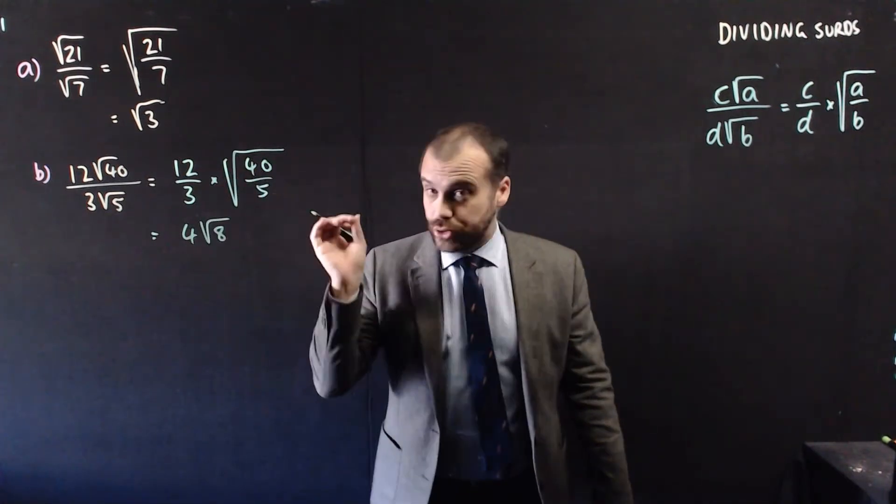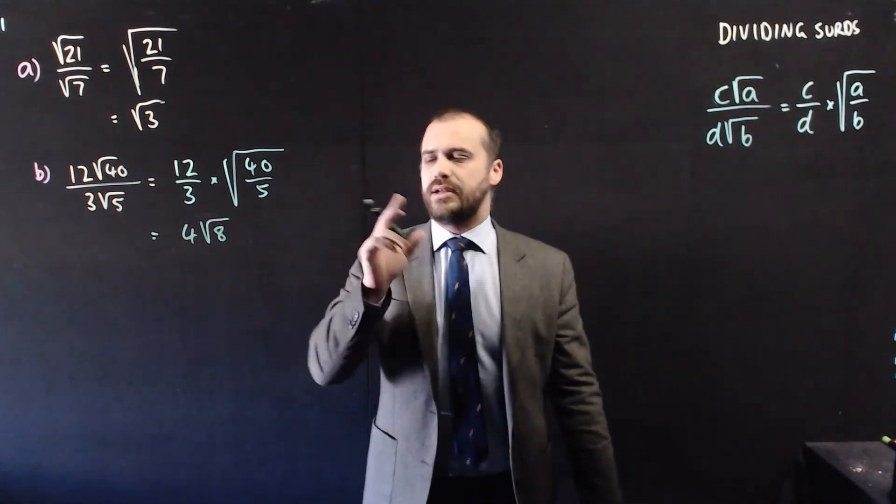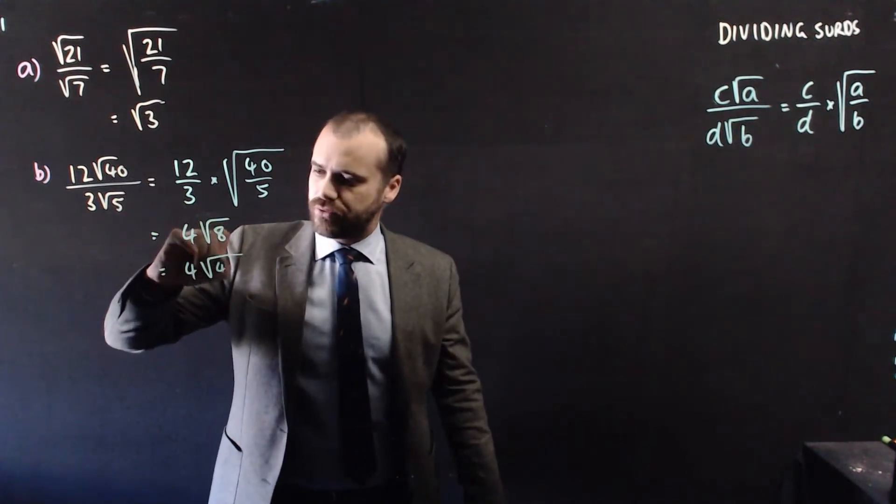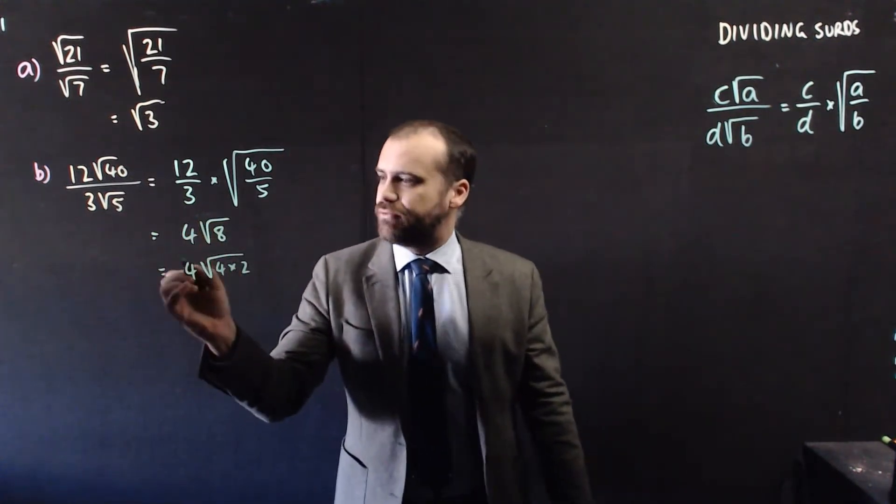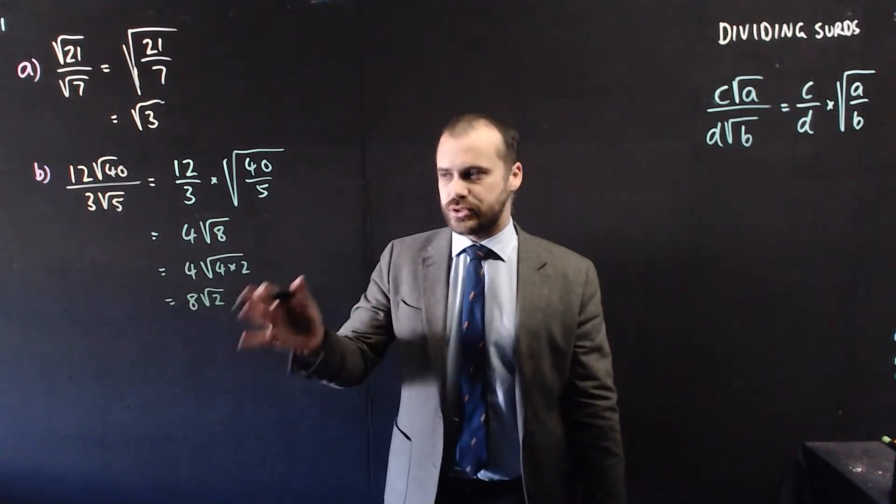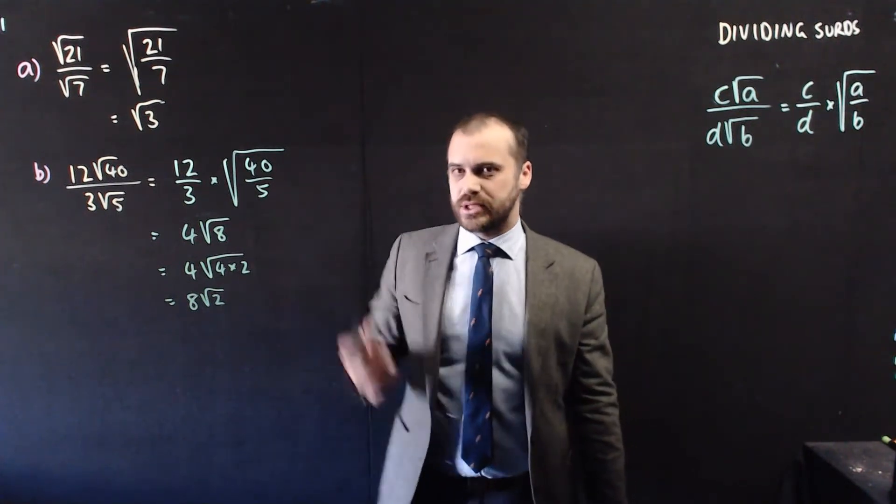12 divided by 3 is 4, and then we have this single square root still, 40 divided by 5, which is 8. Now, you should look and stop and think and say, wait a minute, root 8 can be simplified. We get 4 root 4 times 2, and that 4 can come out. Our answer is 8 root 2. If we're following this rule, we can't really go too far wrong when it comes to dividing surds.